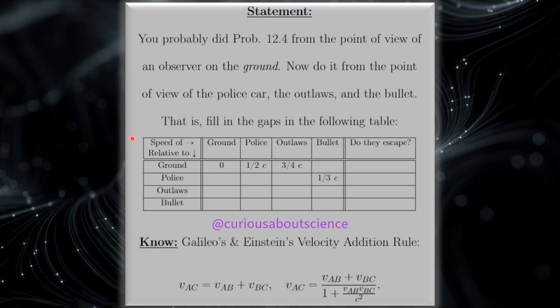To the right in the first row we have the speed of the ground, police, outlaws, bullets, and do they escape? Relative to the ground, police, outlaws, bullets.